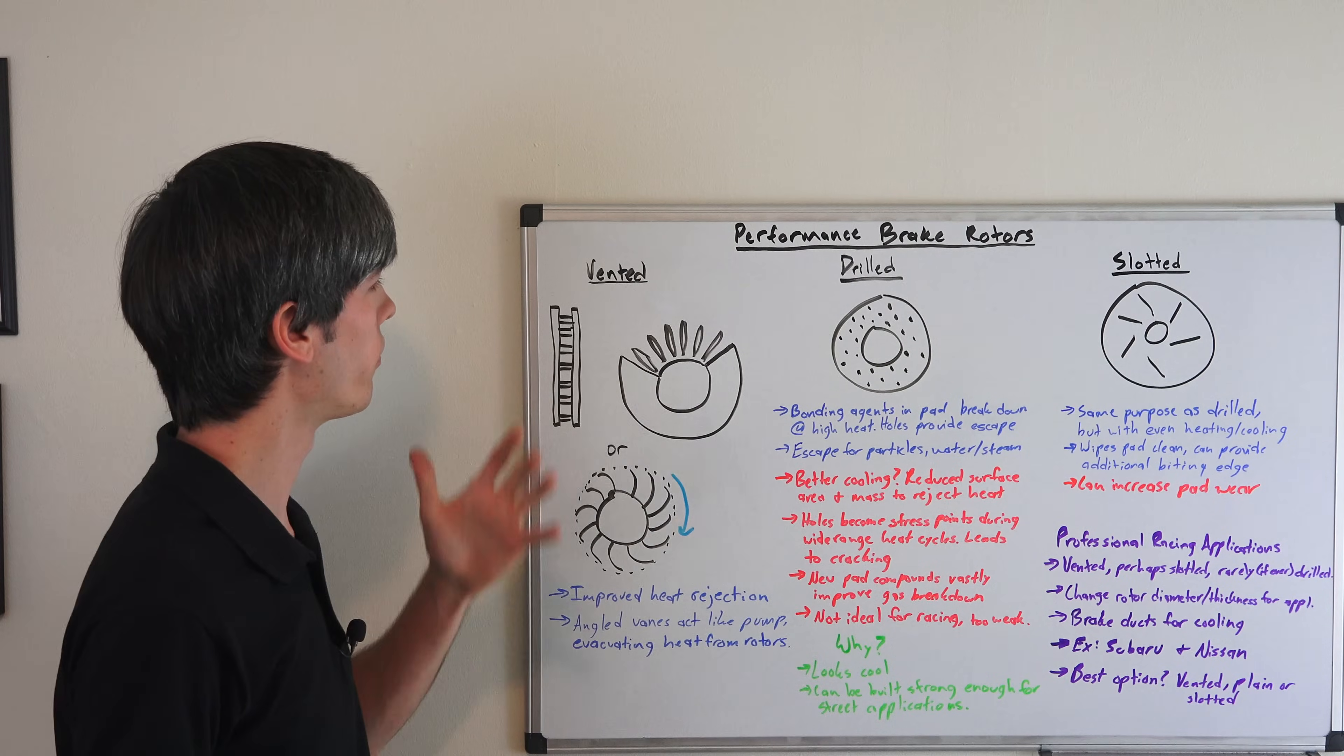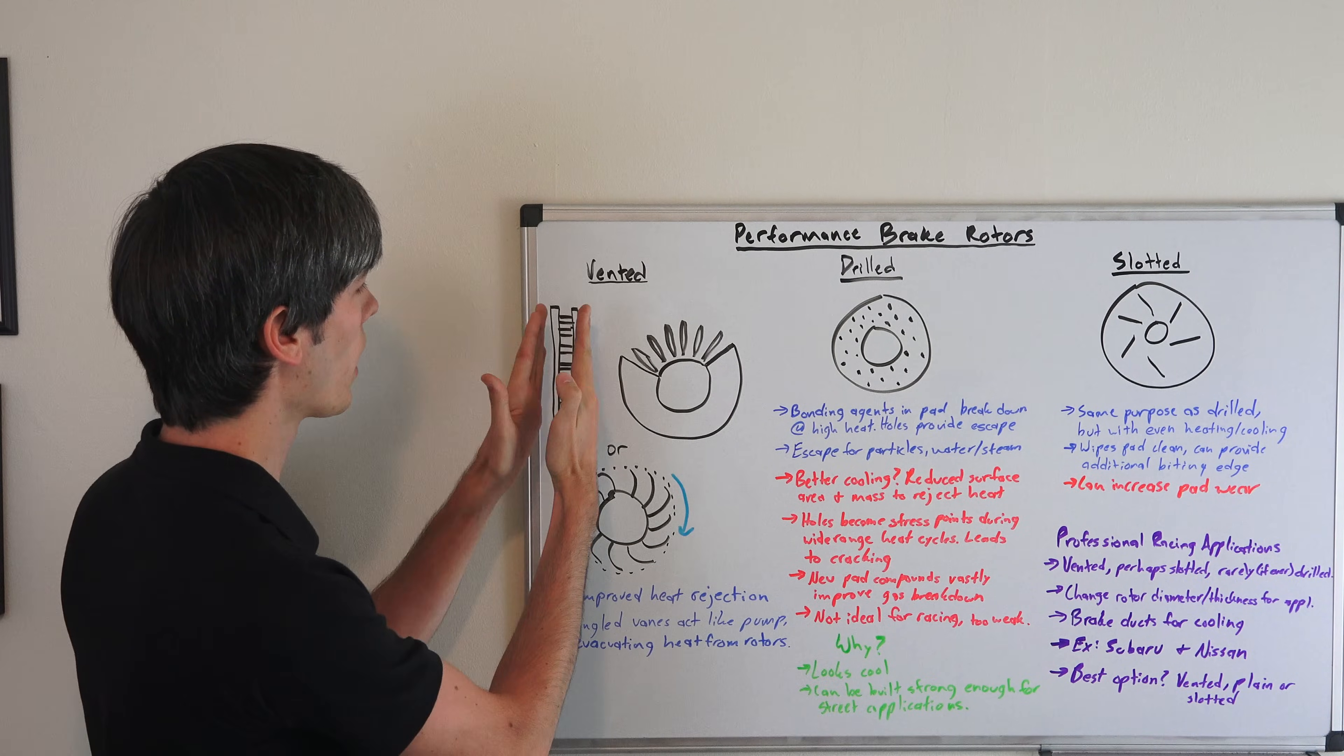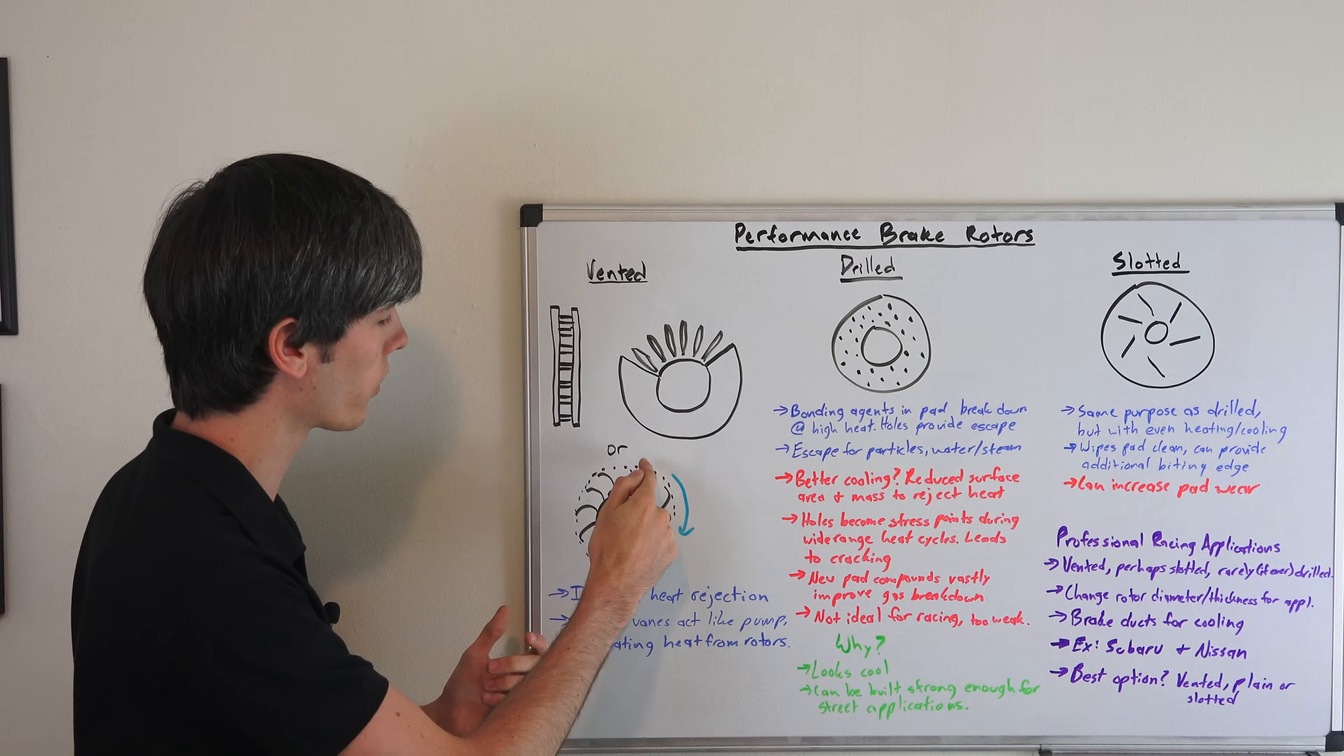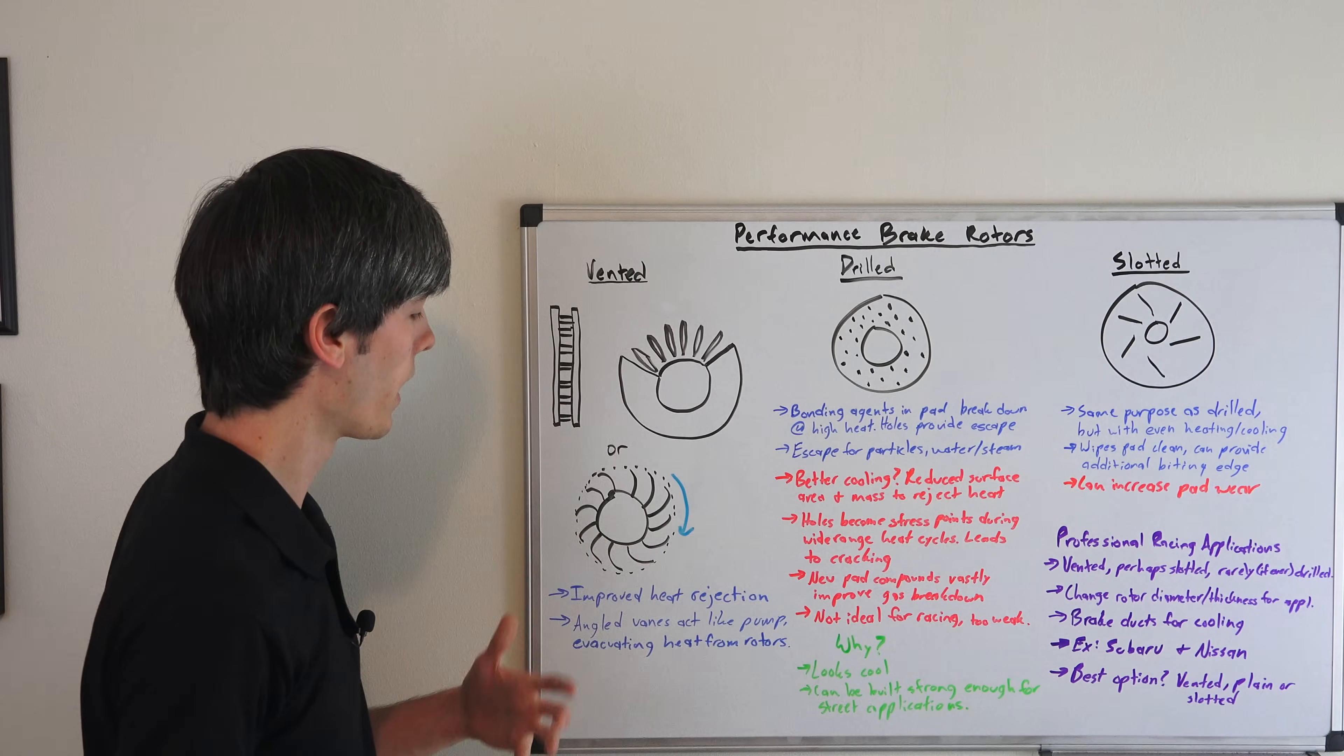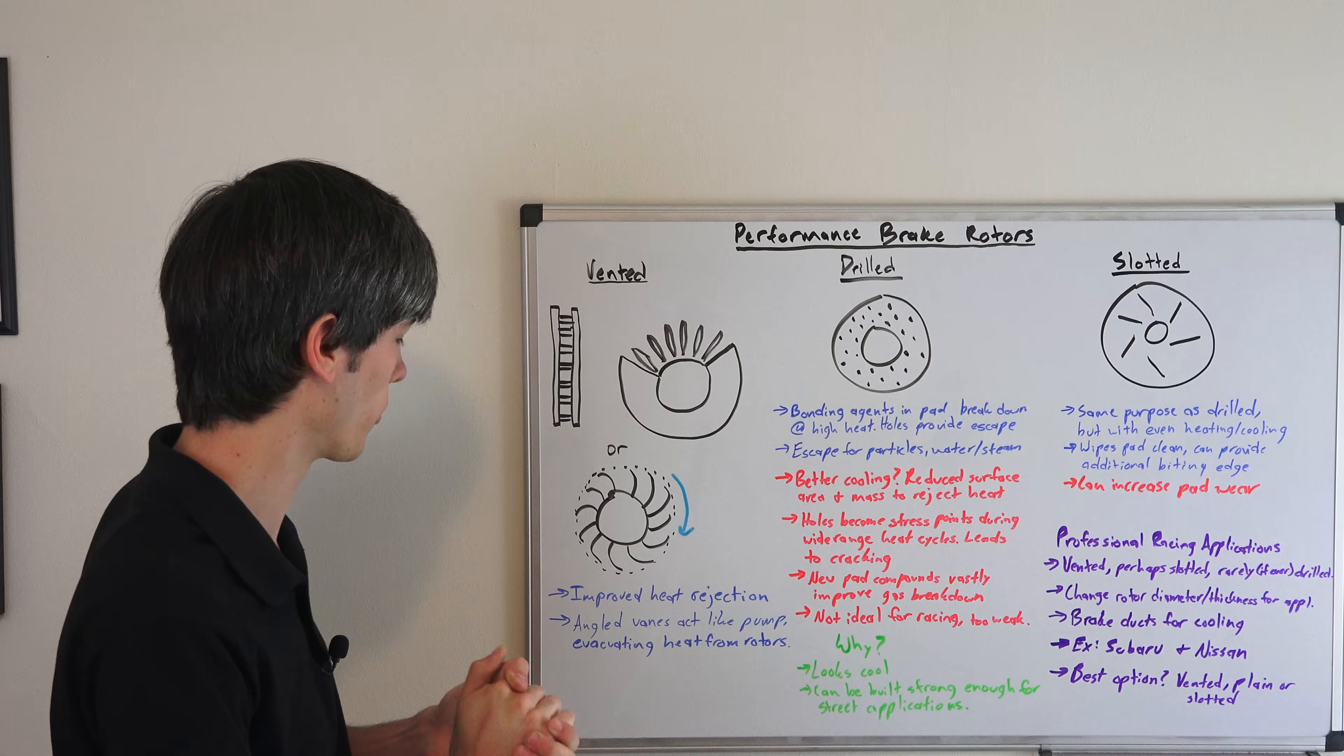Diving right in, starting with vented disc brakes. This is very commonly used on the front brakes for cars. Basically, the purpose is to allow for better cooling. You've got your two plates and then there's an air gap between them to help evacuate that heat. Sometimes you'll actually notice they've got curved veins, which kind of turns it into a small pump. It basically pumps the air out and helps evacuate that heat, allowing for better cooling and longer-lasting rotors that don't fade as you get into higher temperatures.